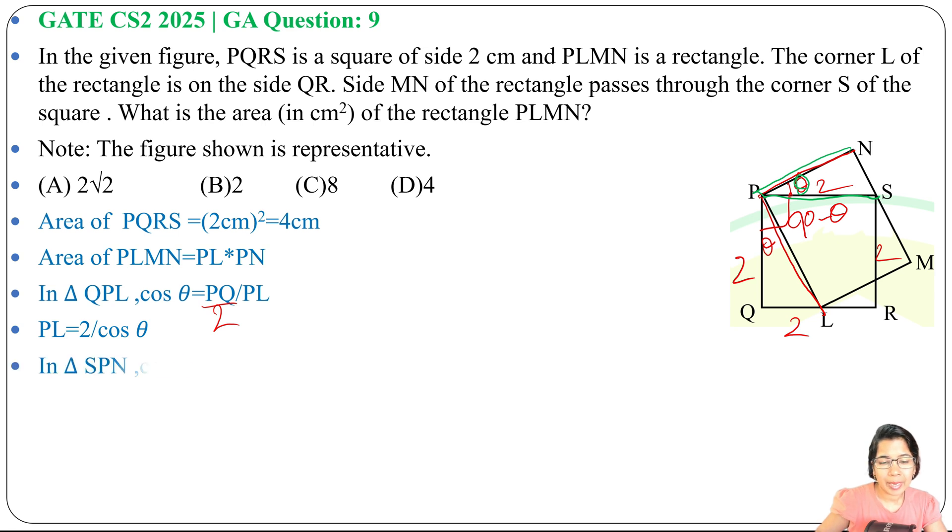Now from this, what is the value of PN? PN will be PS multiplied by cos theta. What is PS? PS equals 2 cm, it's the side of the square.